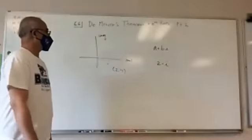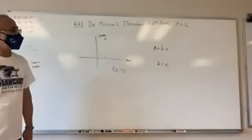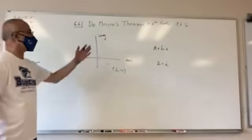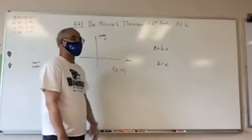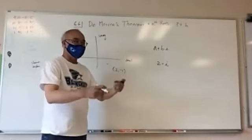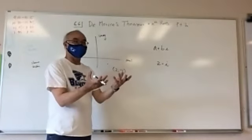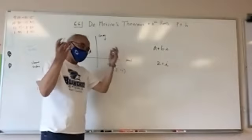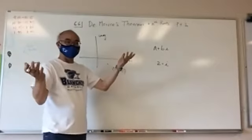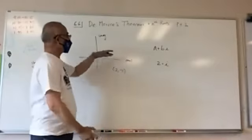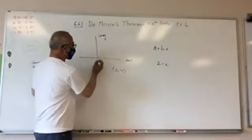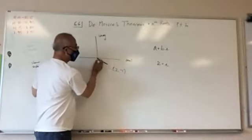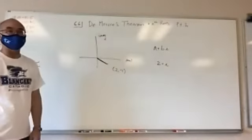So in theory, the complex numbers or imaginary numbers have no meaning, because they do not exist — imaginary, we imagine these things. Yet when we're dealing in the plane, we do have a magnitude here. We have a magnitude.